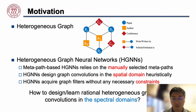This work focuses on heterogeneous graphs, which have multiple types of nodes and edges. These graphs are widespread in our lives. An example is the academic network that includes three types of nodes and four types of edges.